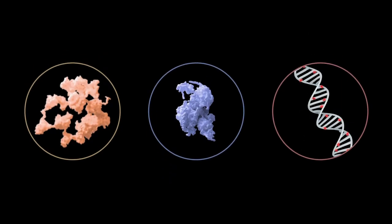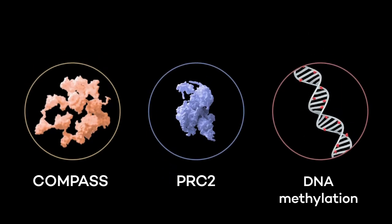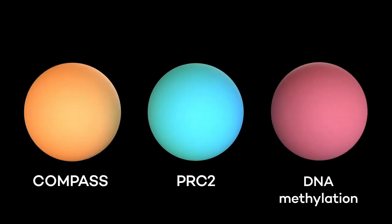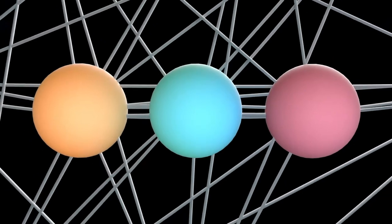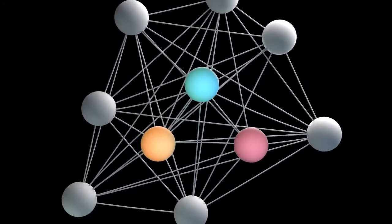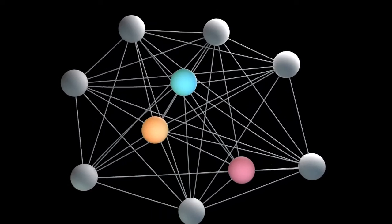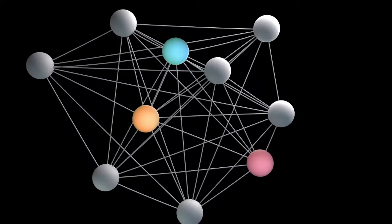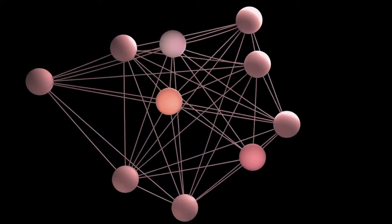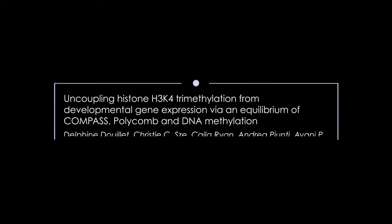This equilibrium among COMPASS, PRC2, and DNA methylation machineries is an important finding in understanding the complex regulatory networks controlling developmental gene expression and how its misregulation may lead to human disease.